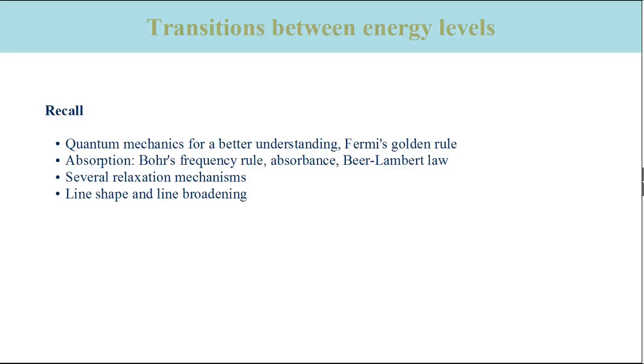In this section of the lecture, we have discussed transitions between energy levels. We have reviewed some quantum mechanics. Because this theory is necessary to understand why we observe only distinct transition energies and why there are transitions with high and low probability. The transition probability is given by Fermi's golden rule, which is a very important principle in spectroscopy.